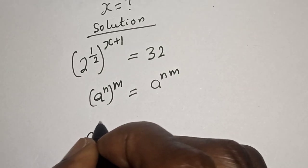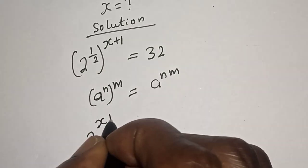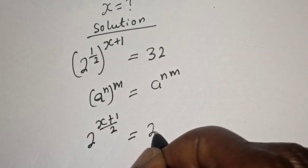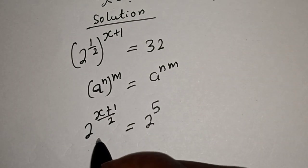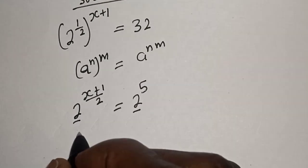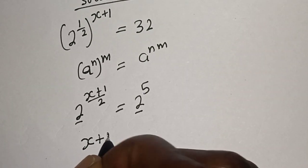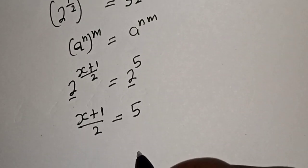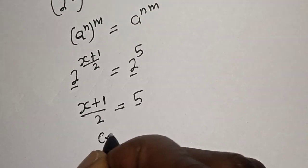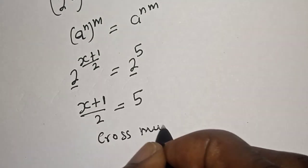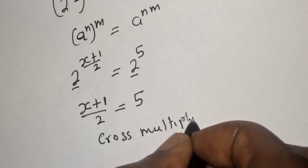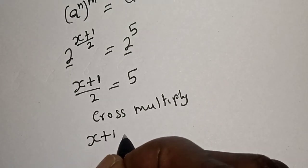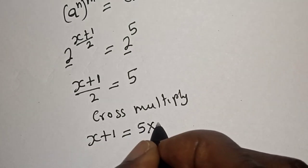We have 2 raised to power s plus 1 over 2 is equal to 32, which can be written as 2 raised to the power of 5. Now they have the same base 2, so we have s plus 1 over 2 is equal to 5.